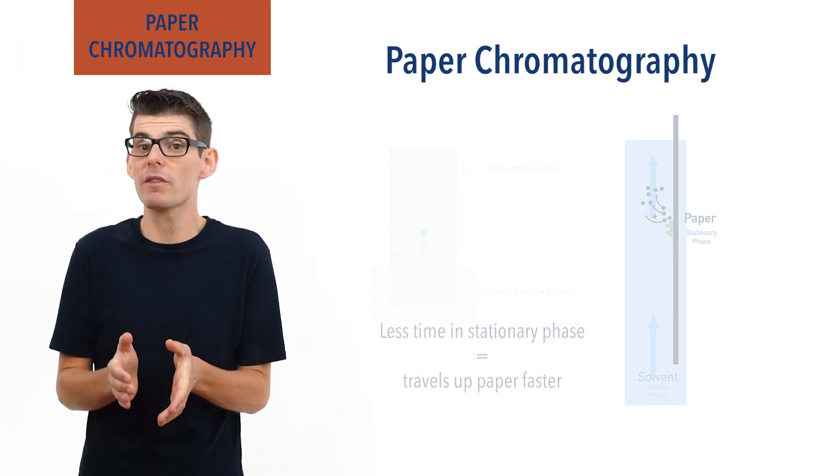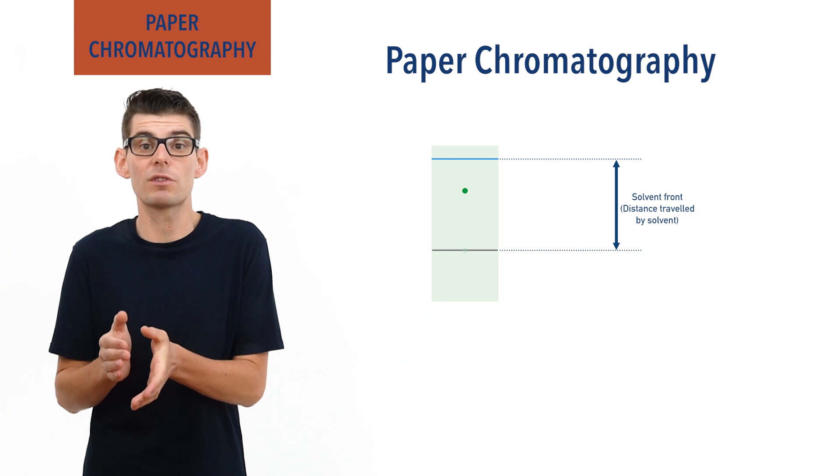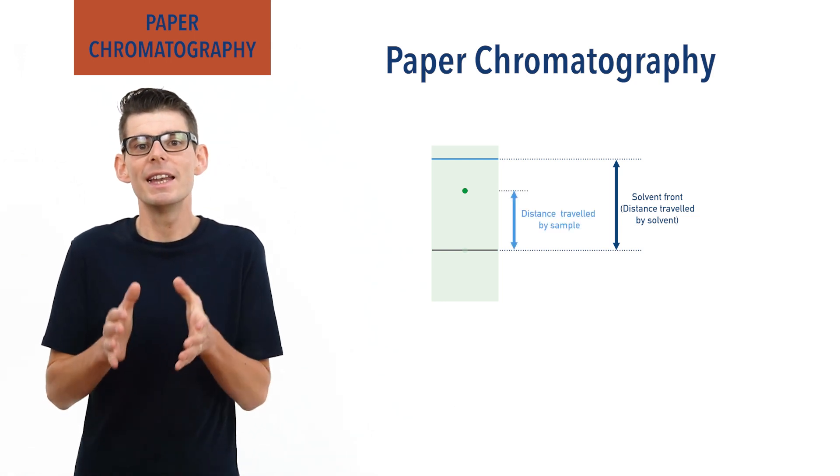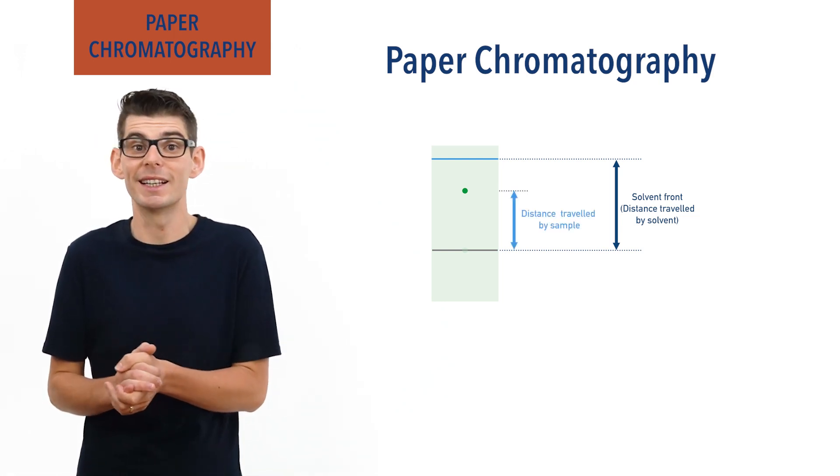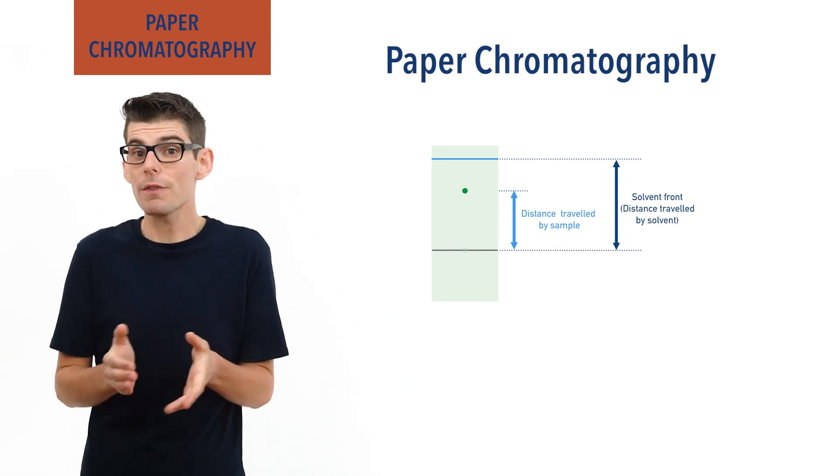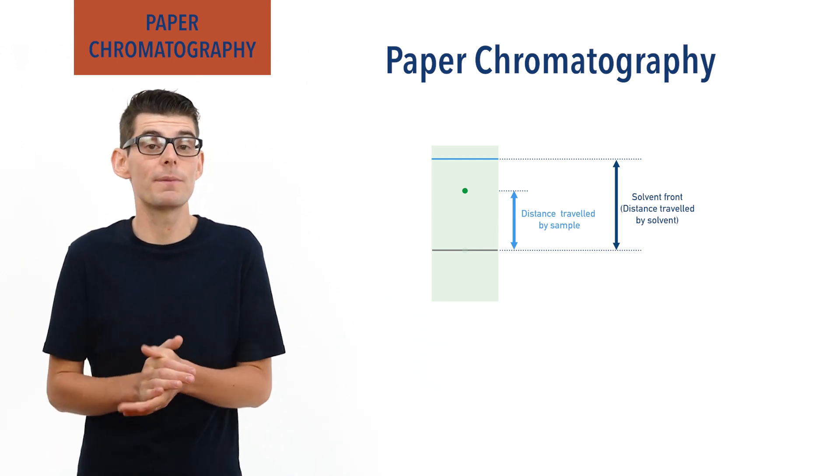Comparisons between the distance travelled by the solvent and the distance travelled by a sample in the same amount of time enable substances to be easily identified. RF values are used to describe these distances.